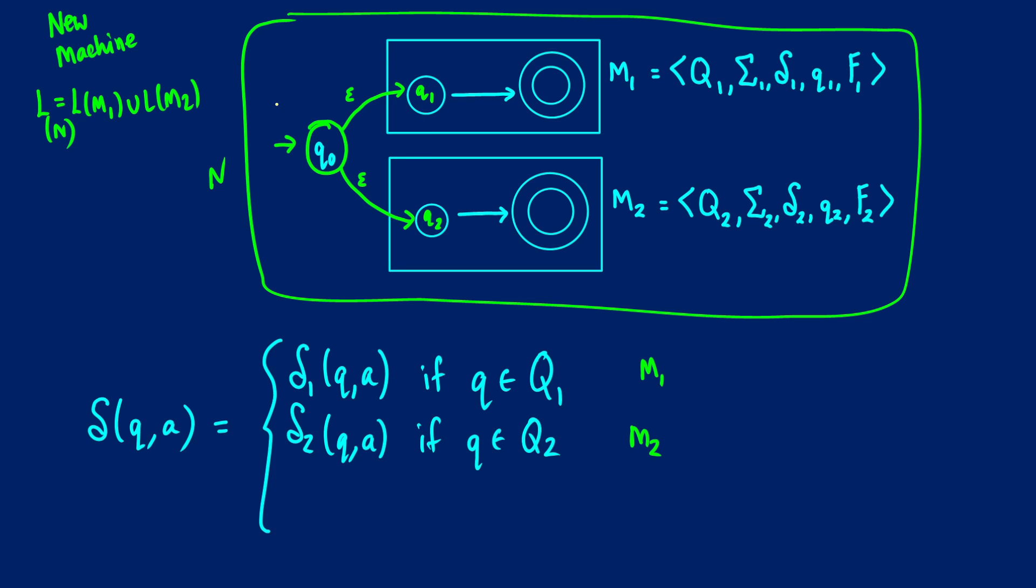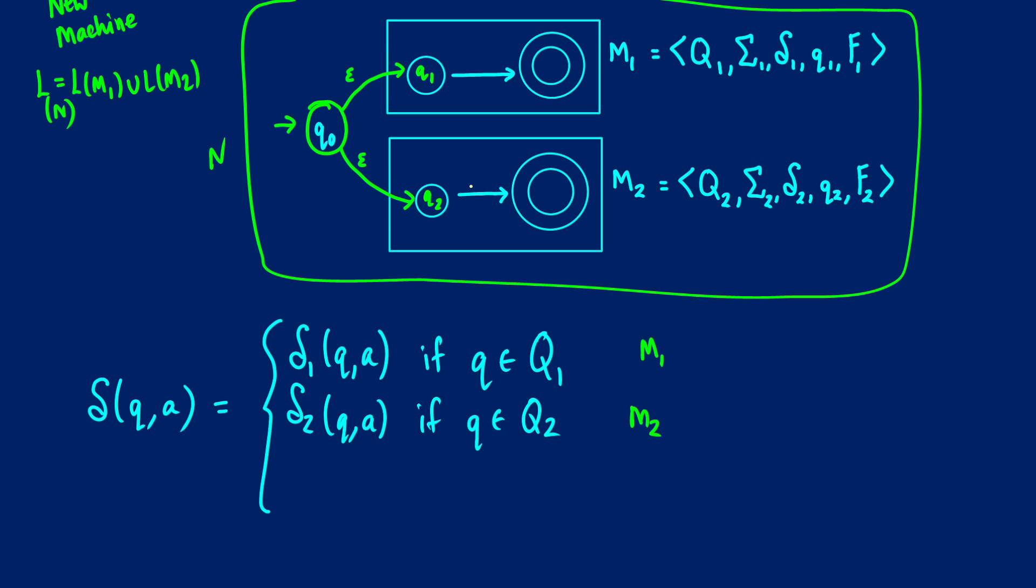So if we're starting at our initial state, if our starting state that we're at for our transition function is Q0, and our condition is we have the letter equal to the empty string. So if that happens, then where should we go? Well, we should go to either Q1 or Q2. So that's where it should go if we have that condition.